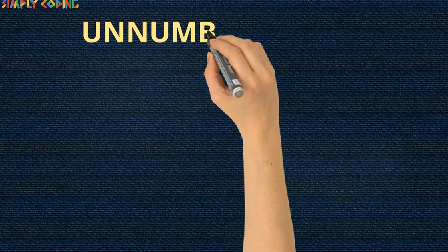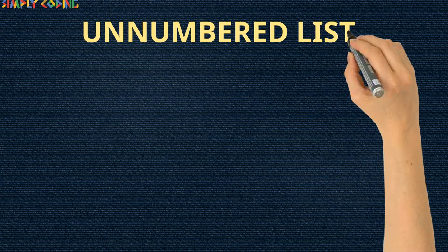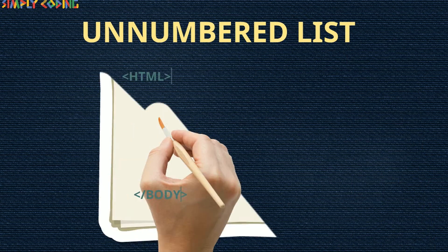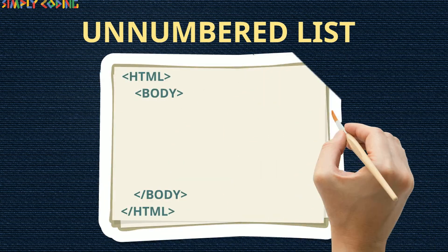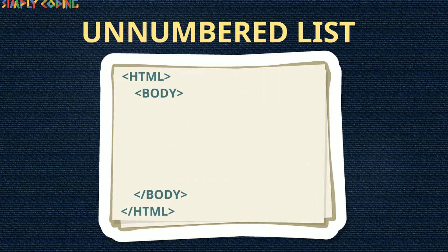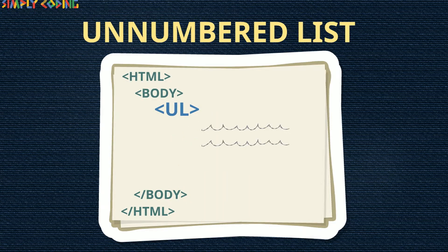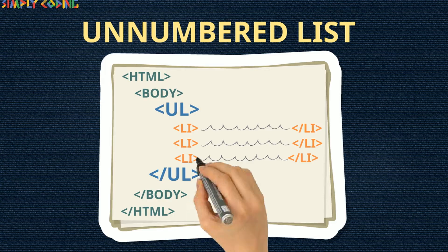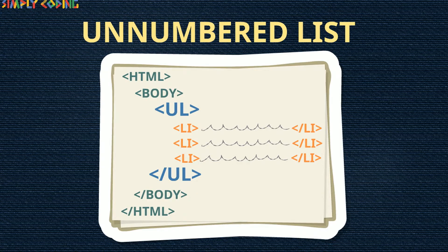Let's start with unnumbered, or bulleted, or unordered list. To create such a list, you enclose the content within a ul tag. Within it, each list item is enclosed with a li tag.